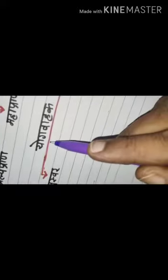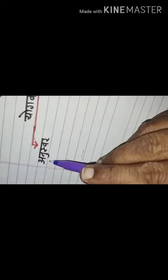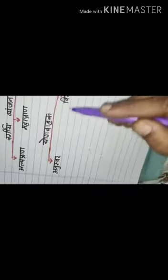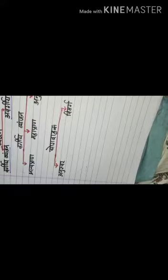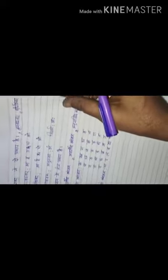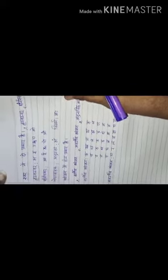In Yoga Vahak, there are two types: Anuswar and Visarg. Now let us learn about Swaraksha. Swarme do.